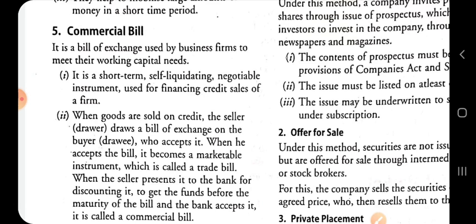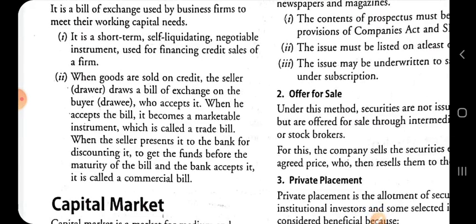Commercial bill is just like a bill of exchange issued by a business firm to meet their working capital needs. It is a short term, self-liquidating, negotiable instrument used for financing credit sales of the firm. When goods are sold on trade credit, the seller (drawer) draws a bill of exchange on the buyer, who accepts it. When the seller presents it to the bank for discounting to get funds before the maturity of the bill and the bank accepts it, it is called a commercial bill.